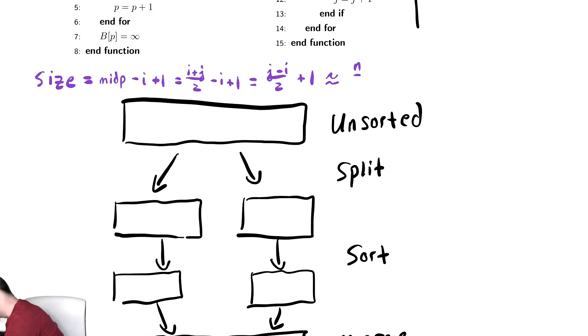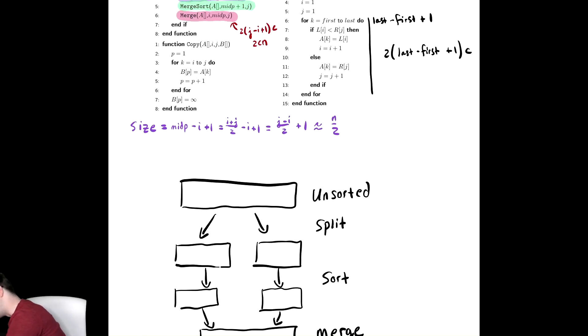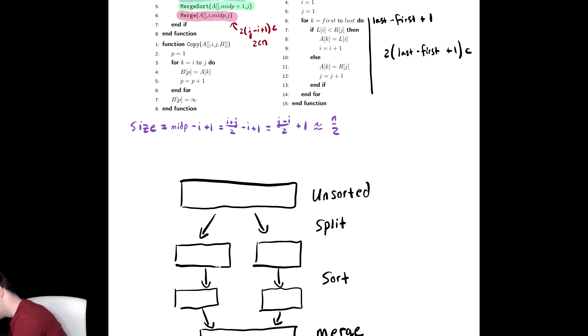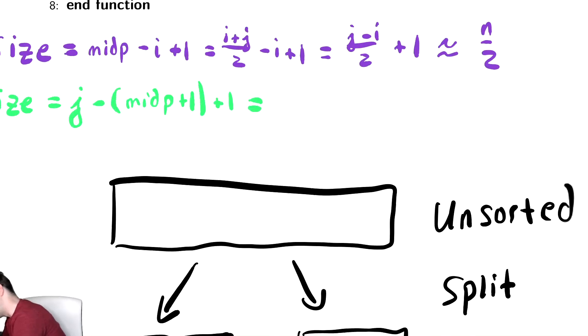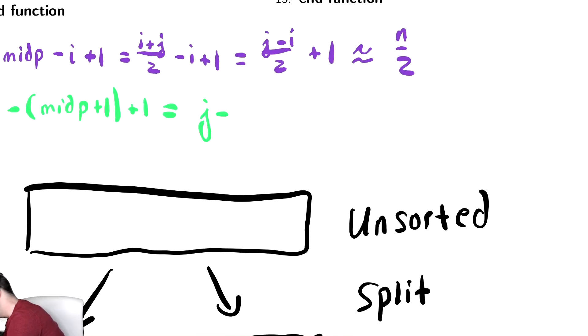Let us try and move our drawing down a little bit. And then we're going to compute the size of the green recursive call, which was j minus midp plus one plus one, which is equal to j minus midp, which is i plus j over two. If we collect together all of our like terms, that is j minus i over two, which is approximately n over two.